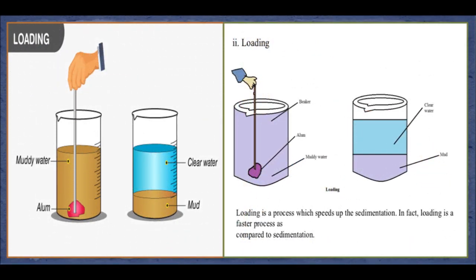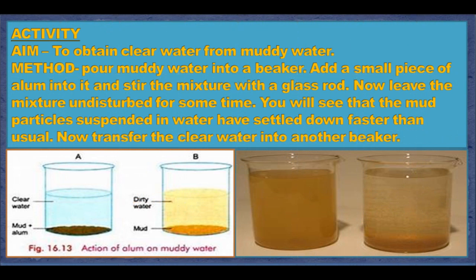Loading. Muddy water contains very tiny fine particles that either stay suspended or take a long time to settle. When alum is added, the heavier particles of dissolved alum settle on top of these fine particles, making them heavy so they settle down quickly. Adding alum loads the mud particles and speeds up sedimentation — this process is called loading. In an activity, pour muddy water into a beaker, add a small piece of alum and stir. Leave it undisturbed and you will see the mud particles settle down faster than usual. The clear water can then be transferred to another beaker.